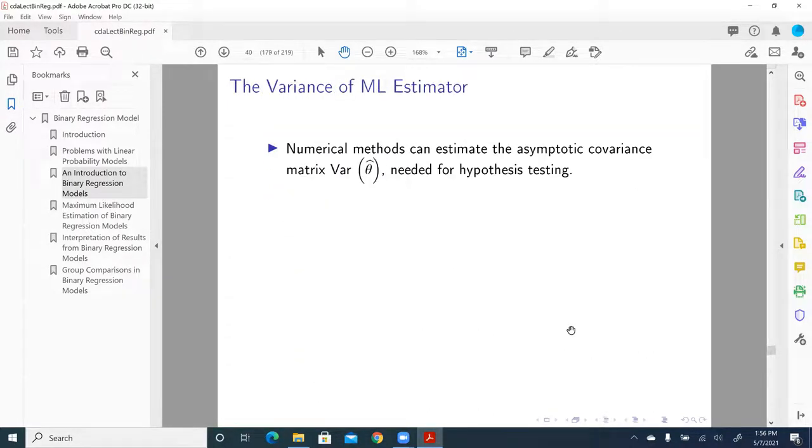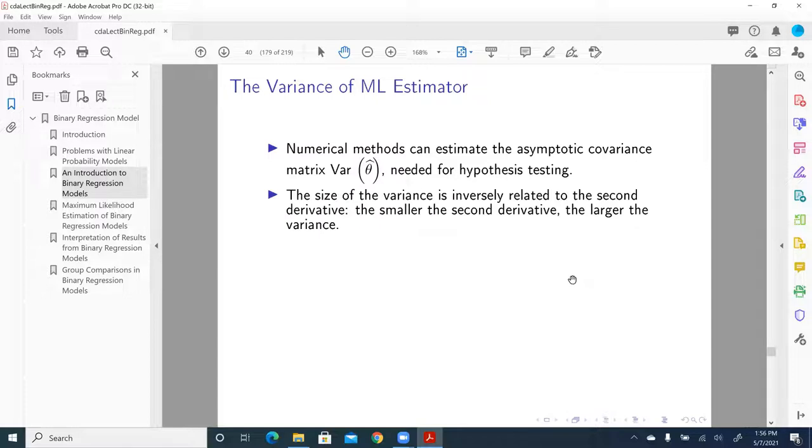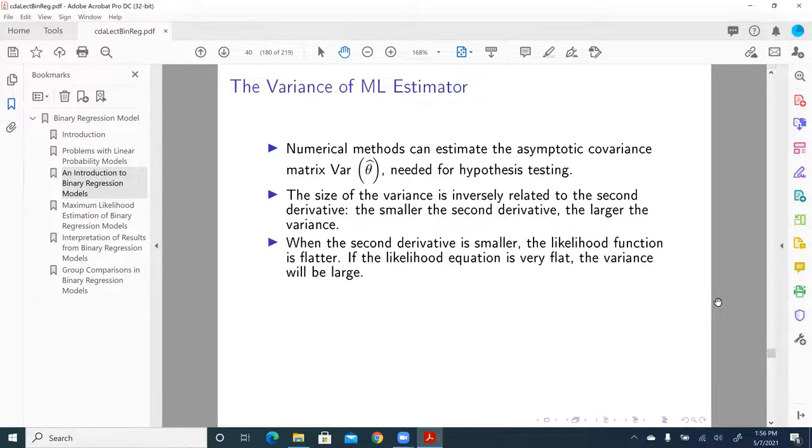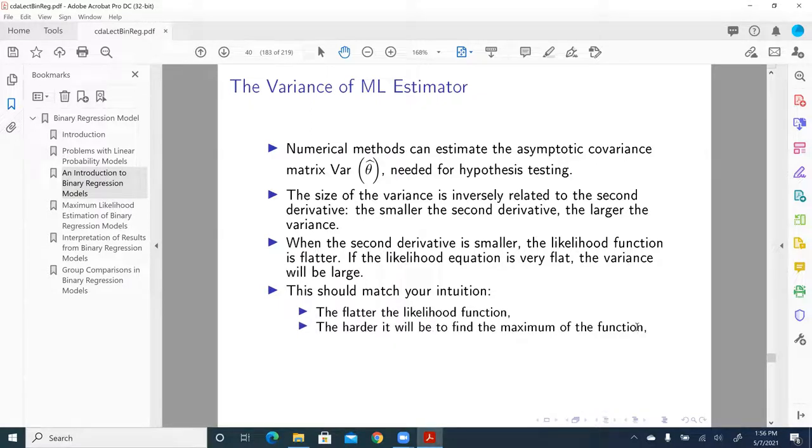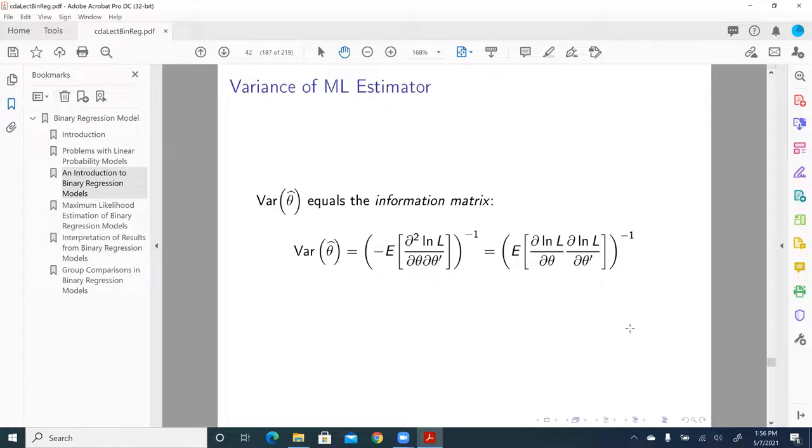In general, the numerical method can estimate the asymptotic covariance matrix, the variance of beta, needed for hypothesis testing. The size of the variance is inversely related to the second derivative. The smaller the second derivative, the larger the variance. When the second derivative is smaller, the likelihood function is flatter. If the likelihood equation is very flat, the variance will be large. This should match your intuition. That is, the flatter the likelihood function, the harder it will be to find the maximum of its function, and the less confidence you have in the estimate.